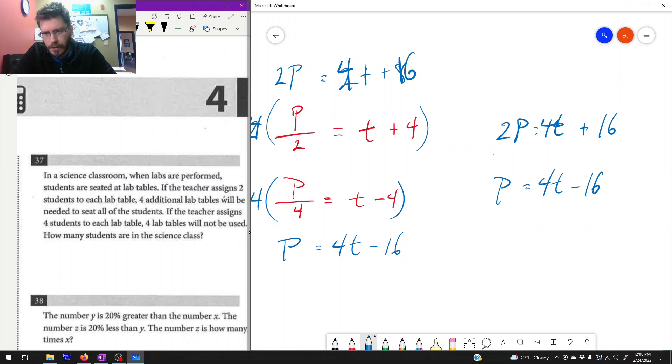In order to make the four t's cancel out, we have to subtract the two equations. So I'm going to put a minus in front there. Two P minus P is P. Four t minus four t is zero, so that just goes away. 16 minus negative 16 is 32. And we're done.